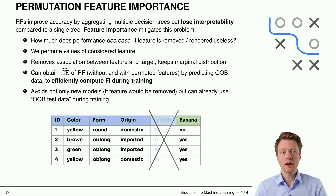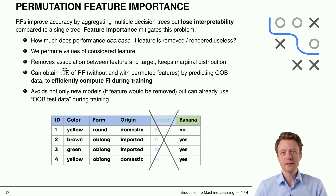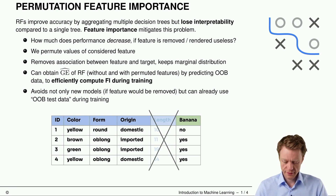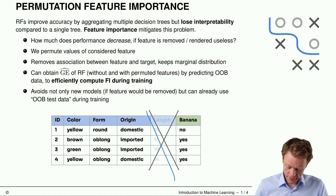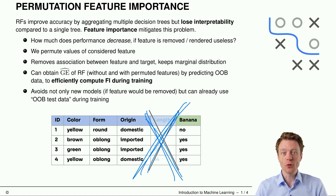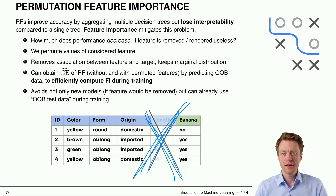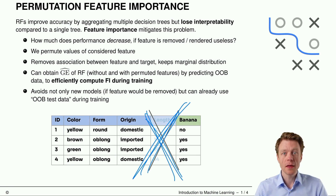The basic question we ask ourselves in permutation feature importance is: how much does performance decrease if a feature is removed or rendered useless? In this visualization we ignore or delete the feature column 'length' as an intuition, but permutation feature importance does not really delete this column — it permutes the entries of this column.